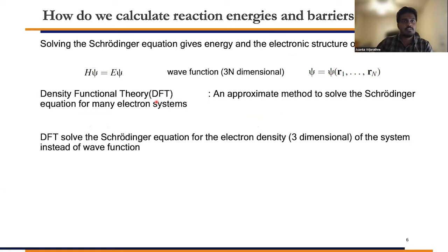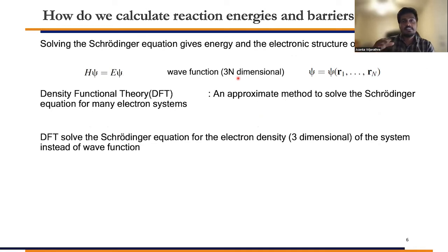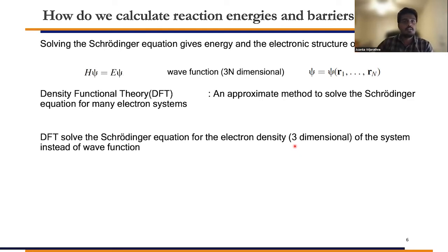Density functional theory offers a solution by reducing the dimensionality of the problem. We have a 3N-dimensional problem to solve for the wave function. But density functional theory provides an alternative method to solve the Schrödinger equation by solving for electron density instead — which is just three dimensions. It is still an iterative process and expensive, but comparatively less expensive than wave function theory calculations. It is widely used in computational catalysis, and our research group primarily uses density functional theory calculations.